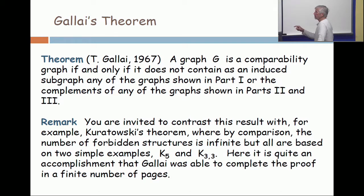So his theorem is going to be a graph G is a comparability graph if and only if it does not contain, as an induced subgraph, any one of the graphs shown in part one, or the complements of the graphs shown in part two and part three.